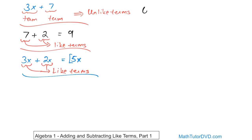What if you have 6a plus 3a? Are these like terms or not? Yes, they are — because you have a here and a here, and they exactly match. So 6 plus 3 gives you 9, and a has to come along for the ride. The answer is 9a.